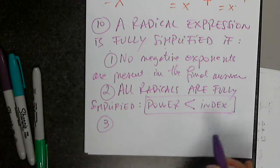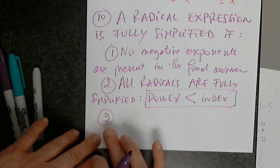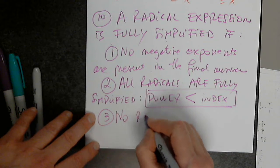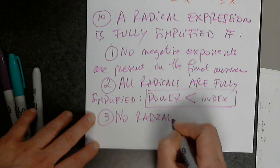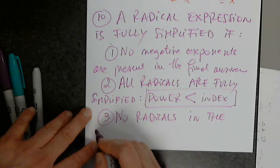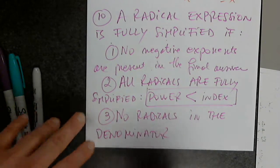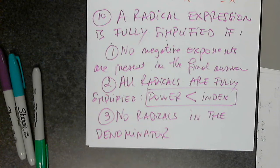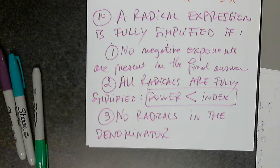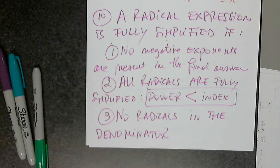And the last condition: no radicals in the denominator. So three conditions must be fulfilled: no negative exponents in the final answer, no radicals in the denominator, and all radicals have the power of the radicand less than the index — not even equal to the index.